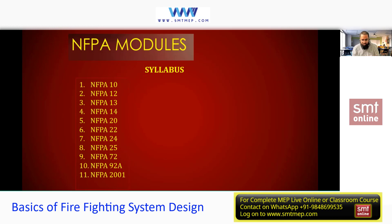NFPA 13 is lengthy — in the sprinkler system we'll deal with types of sprinklers, types of sprinkler systems, and especially hydraulic calculations manually and using allied software. Highlight NFPA 13 — automatic sprinkler system. Next, NFPA 14 is for standpipe systems. Standpipe systems include hose reel systems, landing valves, internal landing valves, Class 1, Class 2, and Class 3 systems. If you're a beginner and don't know what a hose reel is, I'll show you images in this presentation.